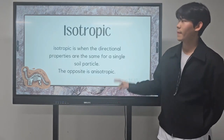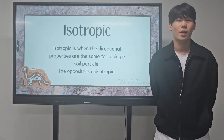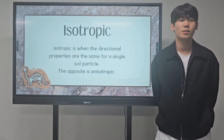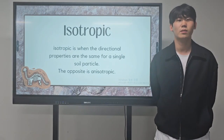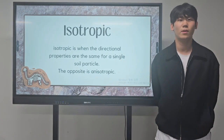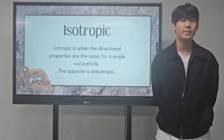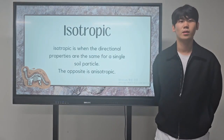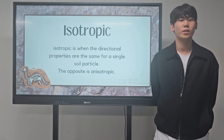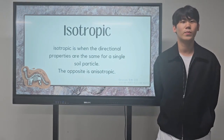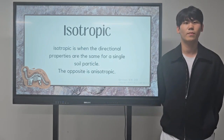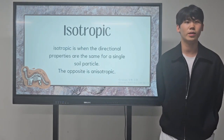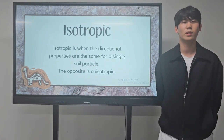Second, in soil, isotropic is when the directional properties are the same for a single soil particle. The opposite is anisotropic. The result of determining homogeneous and isotropic properties is to understand the permeability and infiltration of the soil.